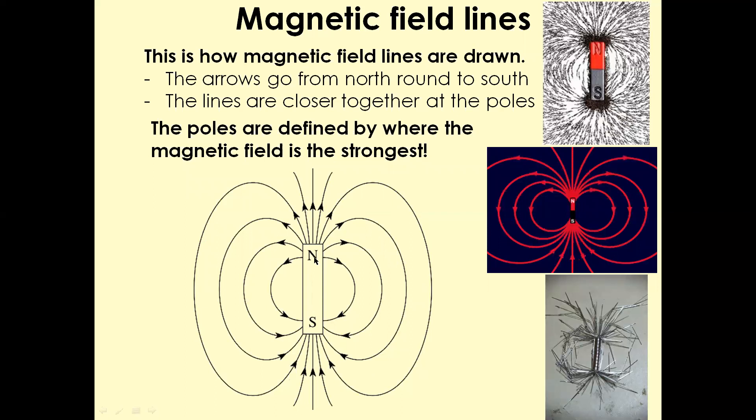And the magnetic lines, they're closer together around the poles and they're further away from each other anywhere else around the magnet. And the poles are defined by where the magnetic field is the strongest. So it's important to remember, magnetic field lines always originate from the north and they always end up in south.